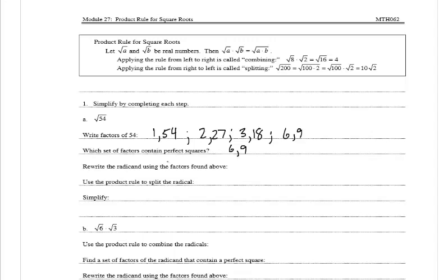It wants us to rewrite the radicand using the factors above. So we have the square root of 54, which can be written as the square root of 9 times 6. Now we use the product rule to split the radical, rewriting this as the square root of 9 times the square root of 6. Simplifying, the square root of 9 is 3, so we have 3 times the square root of 6.